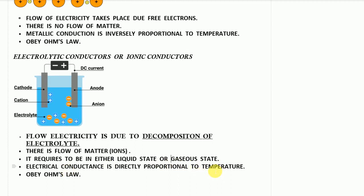Electrolytic conductance is directly proportional to temperature: if we increase the temperature, electrical conductance increases, and if we decrease the temperature, it decreases. This is because increasing temperature causes the electrolyte to dissociate more into positive and negative ions — in addition to dissociation from the potential difference, temperature further increases dissociation, leading to more ions and thus more conduction of electricity.